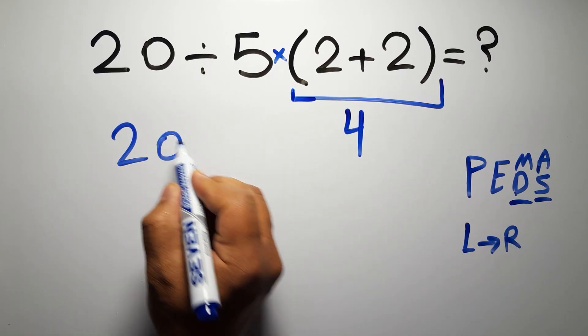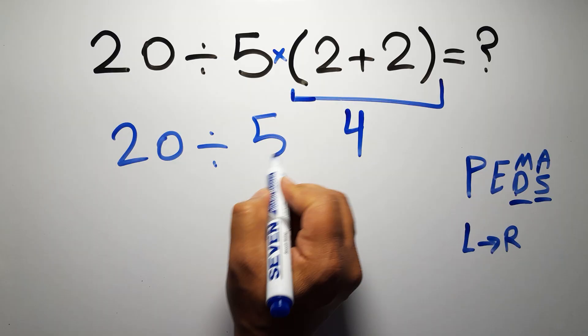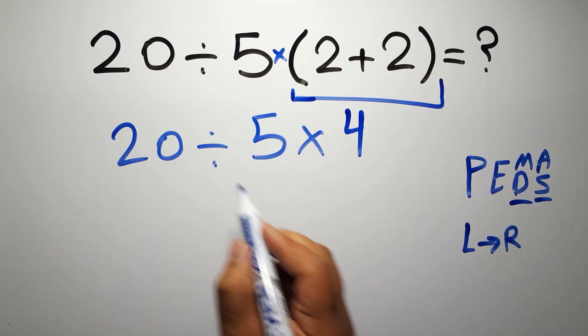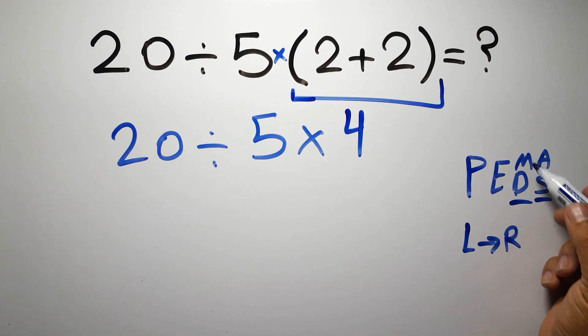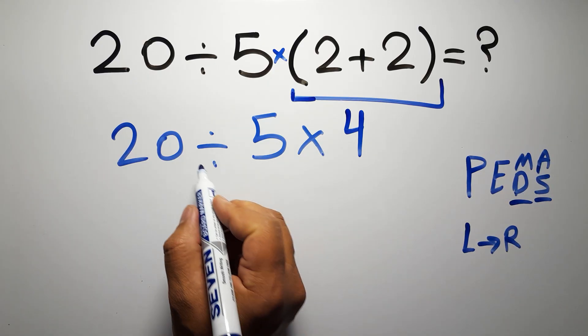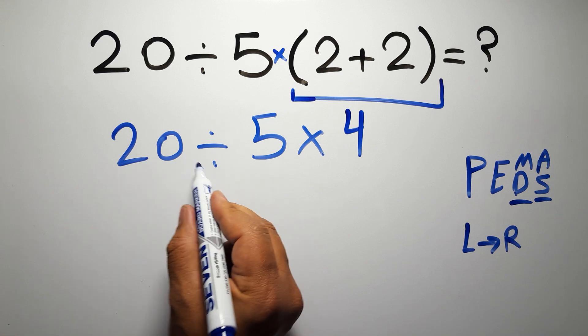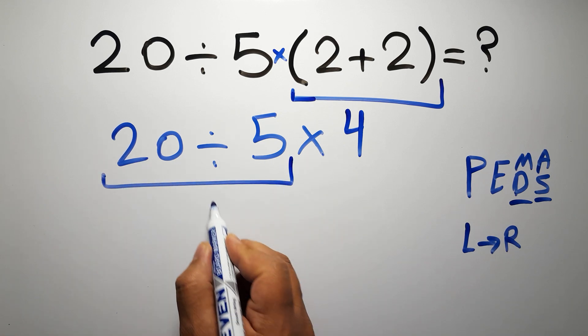So 20 divided by 5 times 4. Now we have one division and one multiplication. As I said, multiplication and division have equal priority, and we have to work from left to right. So here, first we have to do this division. 20 divided by 5 gives us 4.